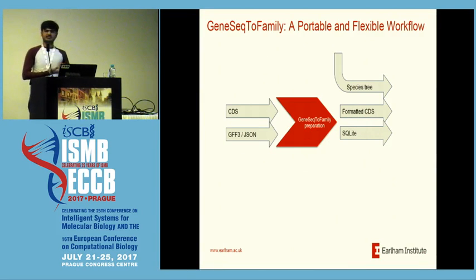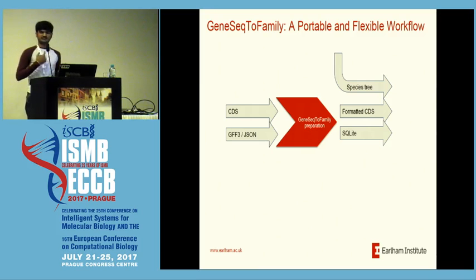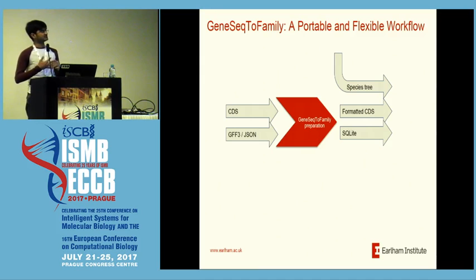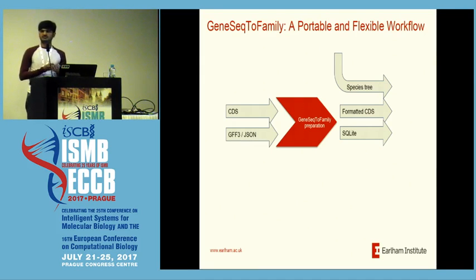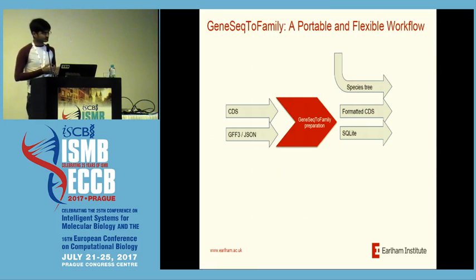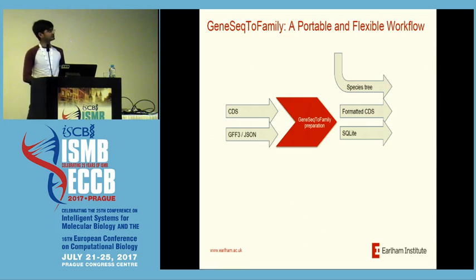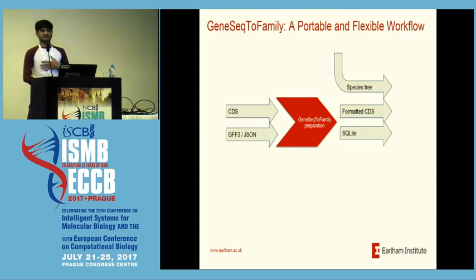The inputs are very easy — just three inputs. You need a species tree for whatever species you're using for the sequences, the coding sequence for each gene you want to use, and the GFF or JSON-formatted gene feature information. We also provide preparation tools: when you put in your CDS and GFF, it will generate the formatted CDS with the species information and an SQLite database for each gene.